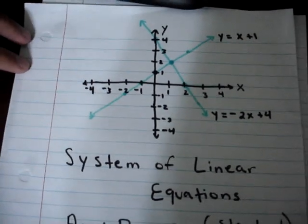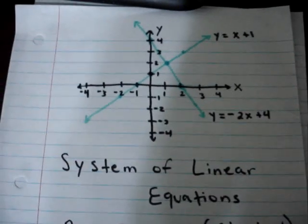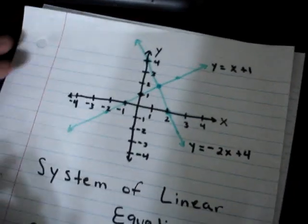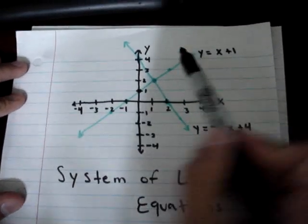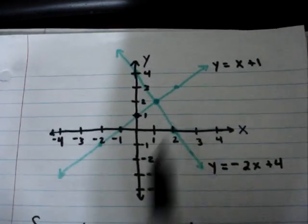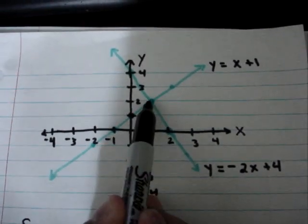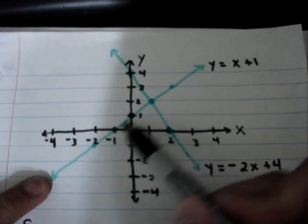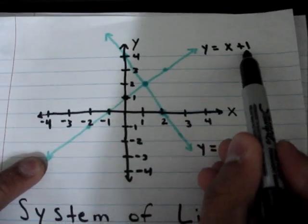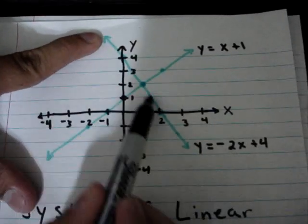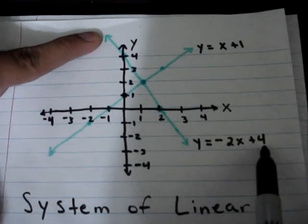In this video I'm going to show you how to solve a system of linear equations by using the elimination method. First, let's take a look at this graph here. We have two lines intersecting each other, and the lines intersect at this point right here. That point is (1, 2). The equation of this line right here is y is equal to x plus 1, and the equation of this line right here is y is equal to negative 2x plus 4.